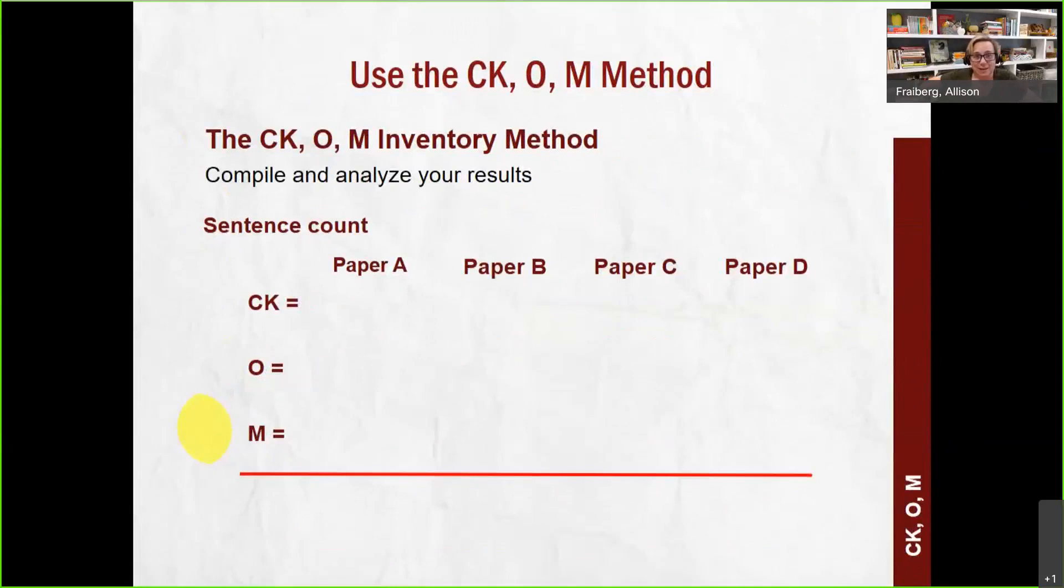Now, here's what tends to happen. Here's what I tend to see or have tended to see over the years. Let's say you do the inventory. And I've just completely made these numbers up. But let's say in paper A, there are 53 sentences that are common knowledge. There are eight sentences that consist of other people's ideas. And there are seven sentences that are mine, that are my insights as the writer. Is this a good analytical paper? No. It's pointless because almost everything is common knowledge. And if it's common knowledge, everybody already knows it. Why are you writing about it? There's no need. You're just telling people what they already know.